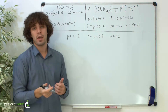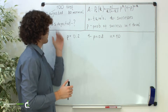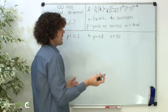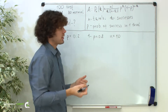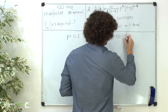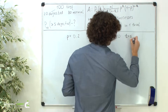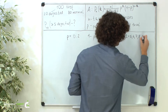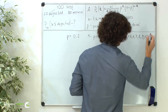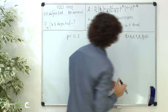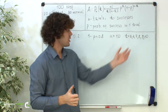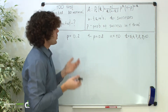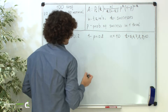As we need to find the probability that there are five or more defected toys, and success is getting a defected toy, then k in our case equals 5, 6, 7, 8, 9, or 10. And we must consider all of these cases. So let's use the Bernoulli formula.